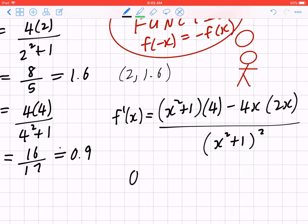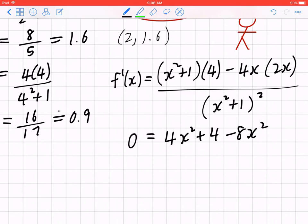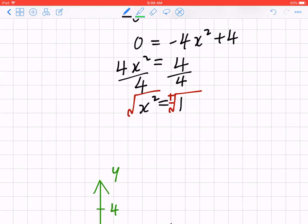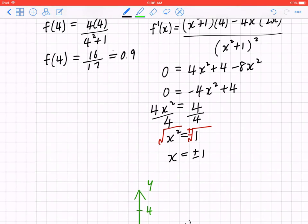To find critical points, you have to set this to be 0, and because it's a fraction, your focus is only on the numerator. That's going to give you 4x squared plus 4 minus 8x squared. If you collect like terms, 4 minus 8 is negative 4, so negative 4x squared plus 4. You can bring 4x squared to the left, keep the 4 on the right. The opposite of multiplying by 4 is to divide by 4. To find x, the opposite of x squared is to find the square root. Be mindful, there are two x values, which are 1 and negative 1.